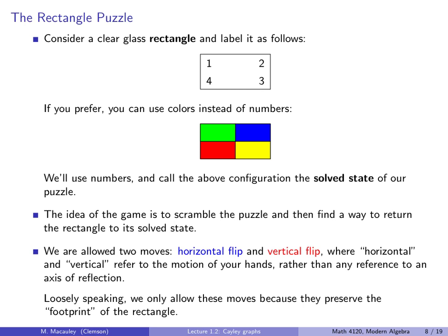Loosely speaking, we only allow these moves because they preserve the footprint of the rectangle. Let me ask you, do you see any other moves that preserve this footprint? And you should. So there's a move that is just do nothing. So don't rotate it. That is an action. And also we can rotate this by 180 degrees. That's the move that preserves the footprint as well. So I said we are allowed two moves. I wasn't saying only two moves. We're actually allowed four moves. Those are just the two generators.